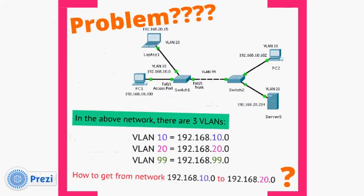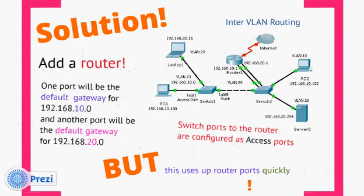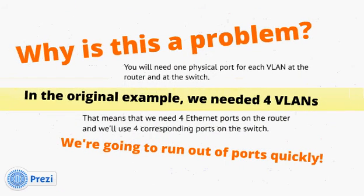There's a problem: in a network with VLAN 10, VLAN 20, and VLAN 99, how do you get from network 192.168.10.0 to 192.168.20.0? There's no mechanism within VLANs to do that. The solution is to add a router — one port becomes the default gateway for 192.168.10.0 and another for 192.168.20.0, with the switch ports to the router configured as access ports. The big downside is that this uses up router ports quickly: for every VLAN, you need one physical port on the router and one on the switch.